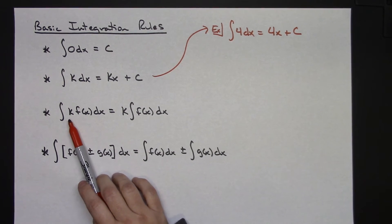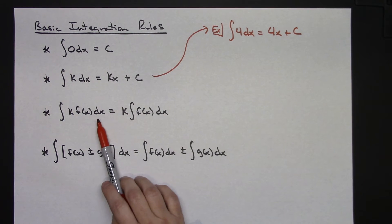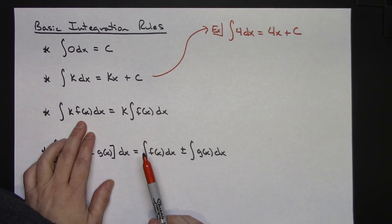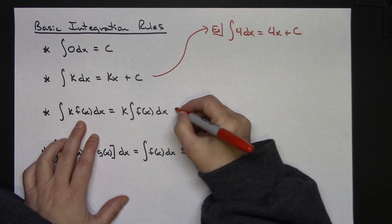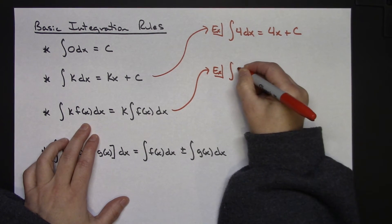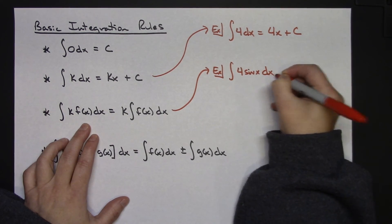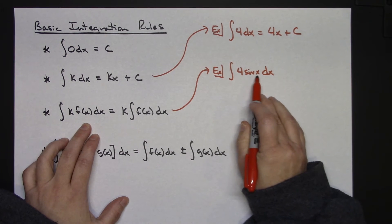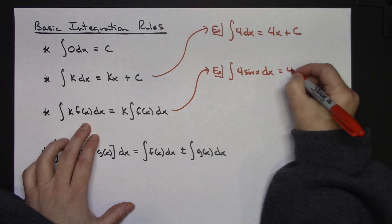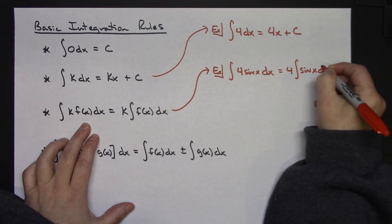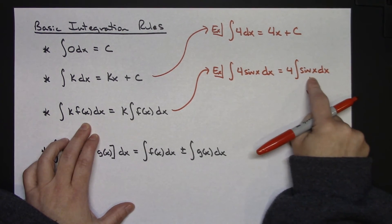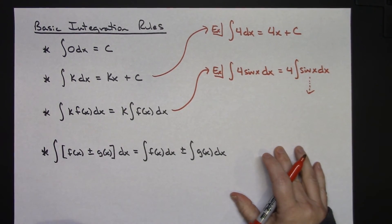Third rule here says if I integrate and I've got some number times my function dx, then I can pull that number out in front of the integral sign and then go ahead and continue to integrate like normal. So let's kind of look at an example there without actually doing the integration. Let's say maybe I was integrating 4 sin x dx. My function right there is sin x. There's my number in front, so I can pull this out in front of the integration sign. So I pull the 4 out in front and then I've got sin x dx. And then I would continue to integrate that and then come up with final answer. And we're not going into that right here in this one because we're just getting some basics for this.